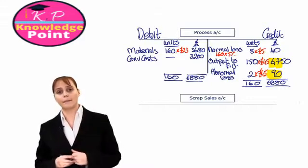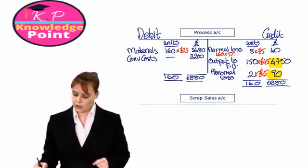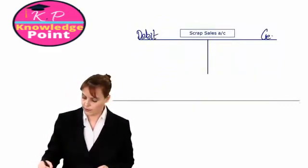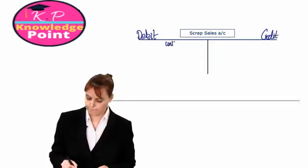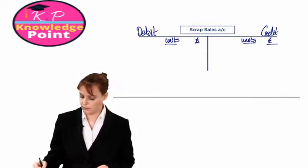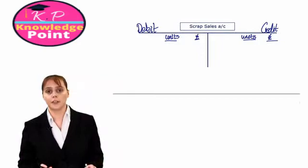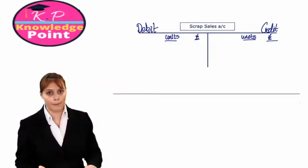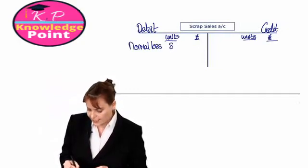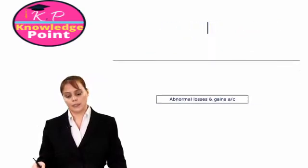We've done our process account. We still need to deal with our scrap sales and our abnormal losses and gains account. In our scrap sales account, we always begin by recording the normal loss units which we're going to sell for scrap. For this company, their normal loss is 8 units for £40.